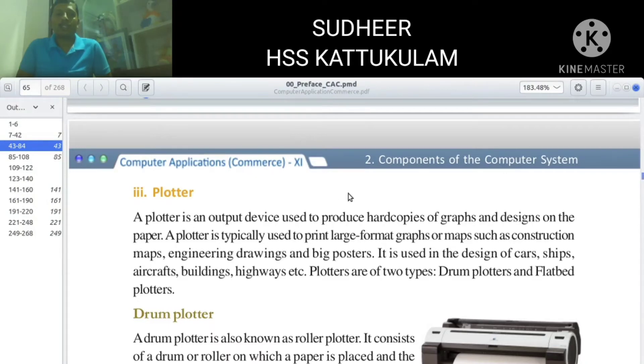Section 3: Plotter. A plotter is an output device used to produce hard copies of graphs and designs on paper.